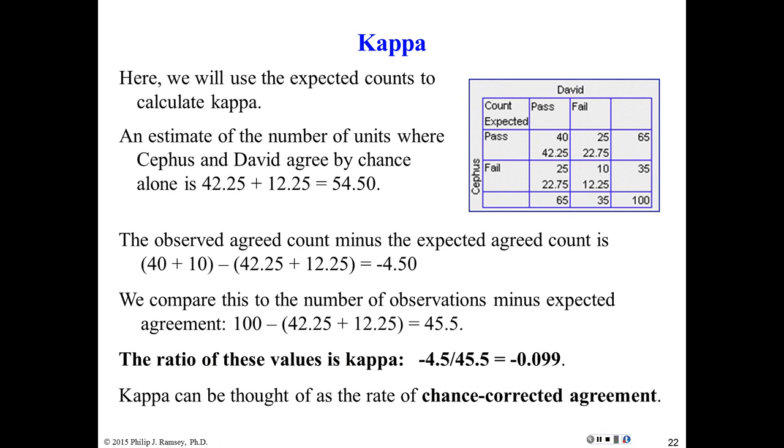This leads us to the calculation of what's called kappa. We use these expected counts, and I showed how they're calculated to come up with the kappa statistic. The number of units where David and Cephas agree by chance is statistically 54.5. They actually agreed on 50. So the differential, what did I say? They actually agreed and disagreed 40 and 10 versus 42.5 and 12.25. In other words, you just subtract the observed from the expected and you get a minus 4.5. So that's the total difference between what you observed and what you would have expected at random. What we observed was just slightly less than what we would have expected at random.